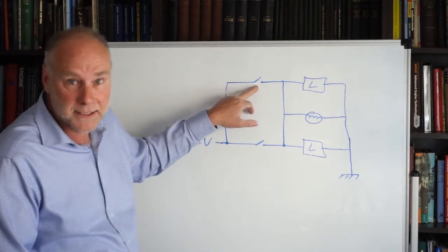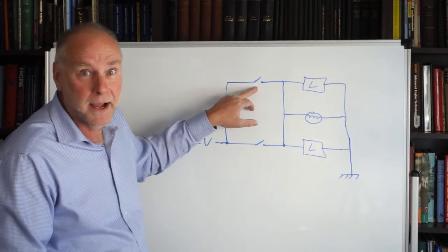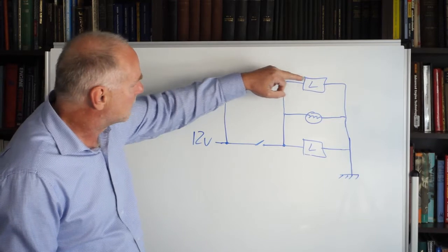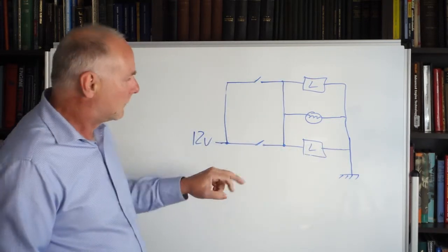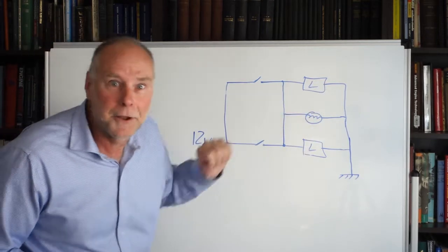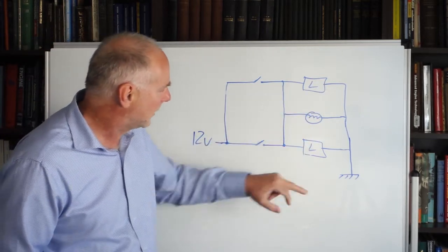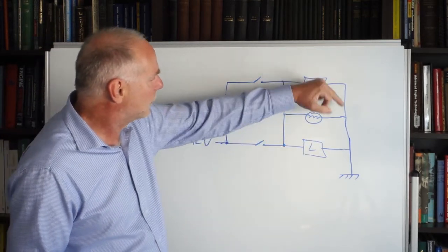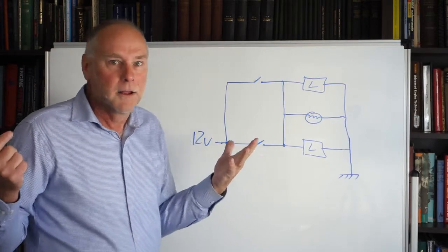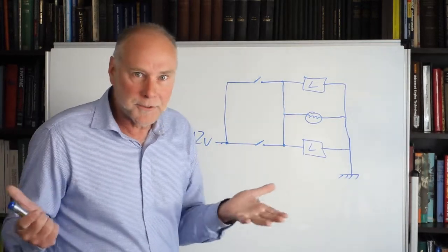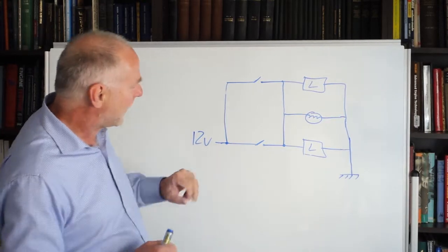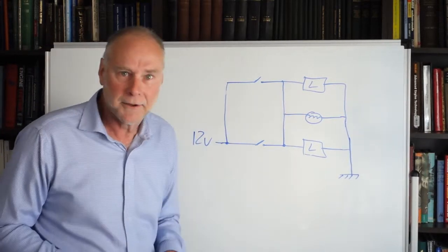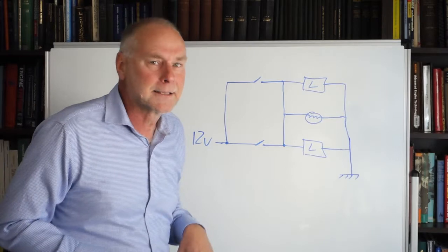When we close that switch, both loads will now turn on. It goes through that load, and it also goes through that load. When we close that switch, both loads will work. Close that switch, that load will work, but so will the top load. We don't want to have those two different loads working whichever switch is operated. We want that switch to operate that load, we want that switch to operate that load. Do we have to have two pilot lights?